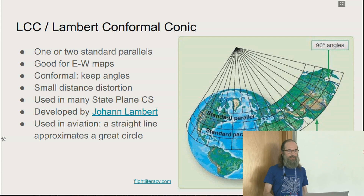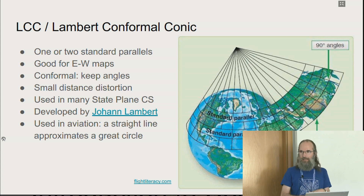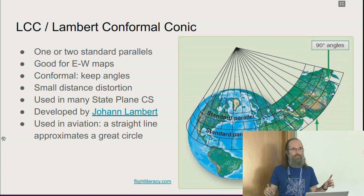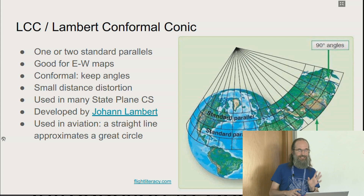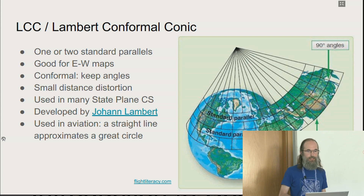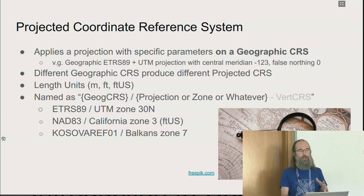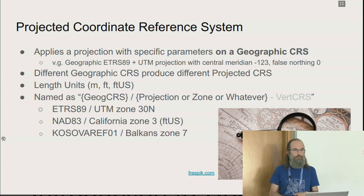Lambert Conformal Conic is a similar idea but uses a cone. It has two standard parallels — or one, depending on the definition. It is good for maps extending east to west, while Transverse Mercator is good for north-south maps, because of how the tangent line runs. Lambert Conformal Conic has small distance distortion and was really interesting for aviation because a great circle is almost a straight line on it. So we have several projections to choose from.